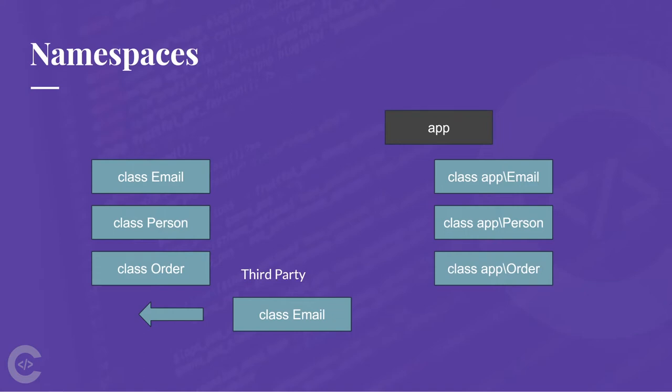Now you can easily install the third-party Email class in your application because there's no name collision — one is called 'Email' and the other is called 'App\Email'. So we need to do the same thing and create namespaces in the PHP store project.